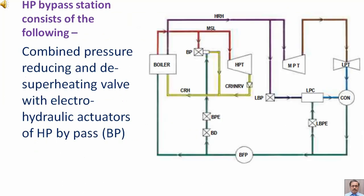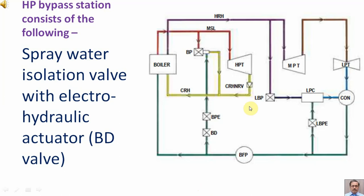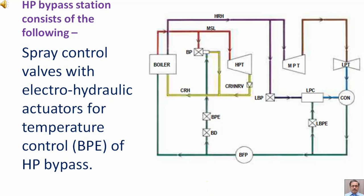HP bypass station consists of the following: combined pressure reducing and desuperheating valve with electro hydraulic actuators of high pressure turbine bypass, that is BP. Spray water isolation valve with electro hydraulic actuator, BD valve. Spray control valves with electro hydraulic actuators for temperature control, that is BPE of HP bypass.